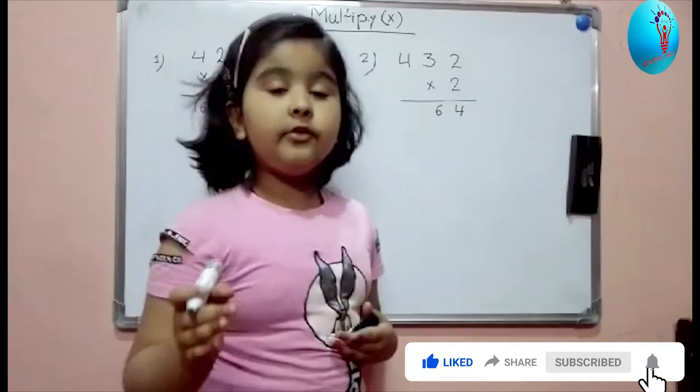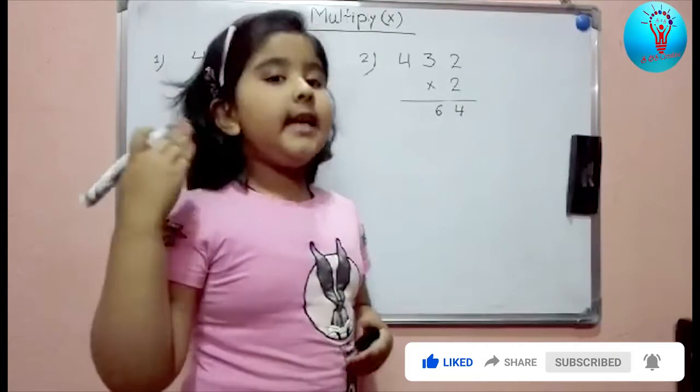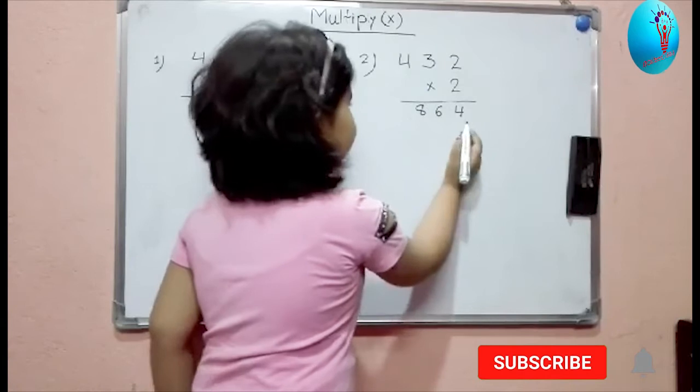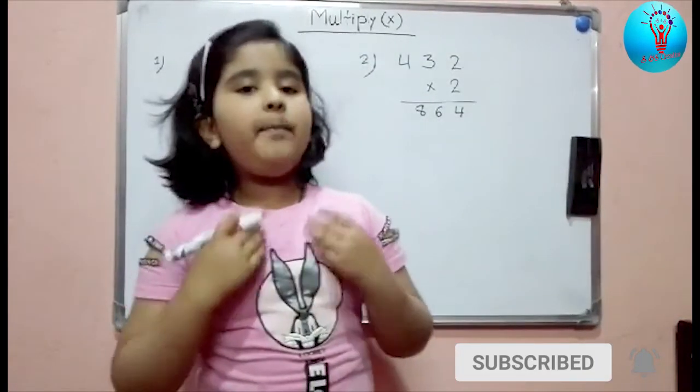And 2 times 4 is how much? 2 times 1 is 2, 2 times 2 is 4, 2 times 3 is 6, 2 times 4 is 8. So here will be 8. So the total answer is 864. Thank you, I hope you all understand.